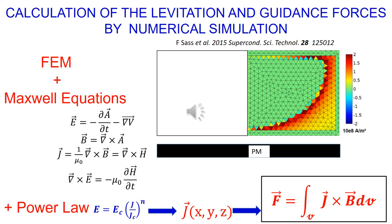The levitation and guidance forces can be calculated by numerical simulation. One generally combines the finite elements method and the Maxwell's equations. Superconductivity is accounted for by the so-called power law. The calculation results in the determination of the current density everywhere in the superconductor, and as a result of the force of interaction between the superconductor and the magnet.